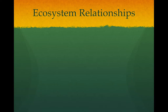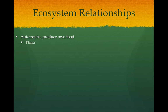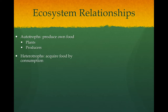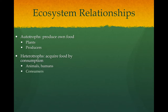Today we're talking about the relationships between organisms in an ecosystem and they break down into two basic groups. The first group would be our autotrophs — the word autotrophs means produces their own food. Organisms that do photosynthesis, like plants, are also called producers because they produce food. The other type of organisms are heterotrophs, the opposite of autotrophs, so they cannot produce food. They have to acquire food by consuming it, getting it from the environment. These are examples of animals and humans — they're also called consumers.